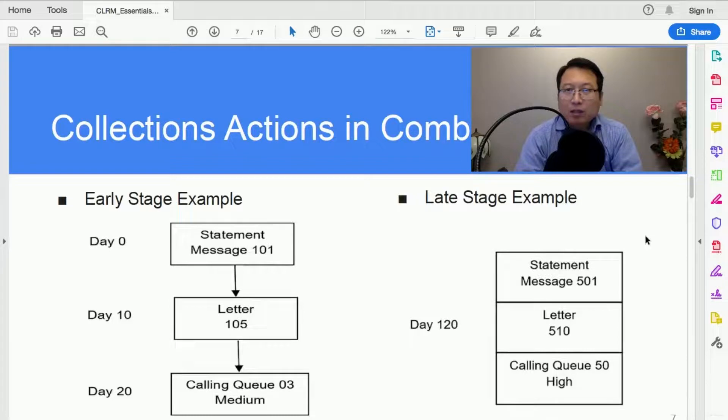But also we need to send a letter right away on day 120, probably telling the customer you lose your credit privilege, you really need to pay this up. And also this account should be placed in the calling queue 50, which is assigned a priority of high. You can see that once in late stage, everything has to happen right away on the statement date.